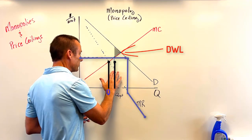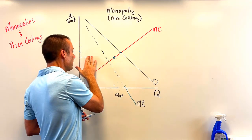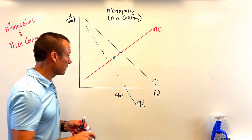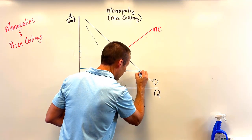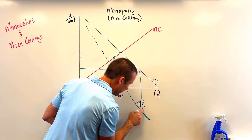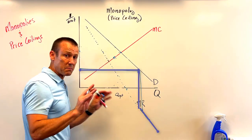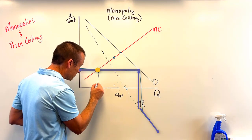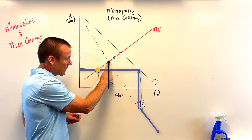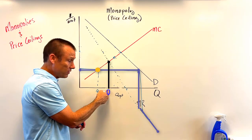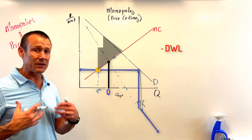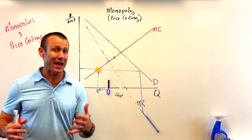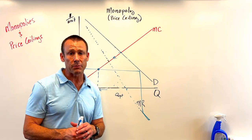Finally, if we get very aggressive with this price ceiling — really bringing that maximum price down — output could actually decrease. If we put the price ceiling very low, the new MR hits MC at a point to the left of the old unregulated output. So output has actually gone down, and dead weight loss has actually increased because we got too aggressive with the price ceiling. It doesn't have to be the case that output goes up just because you impose a price ceiling with market power.